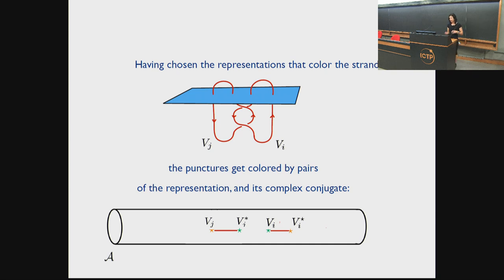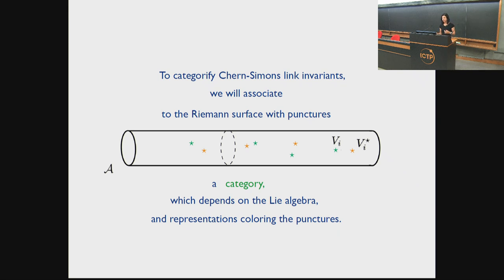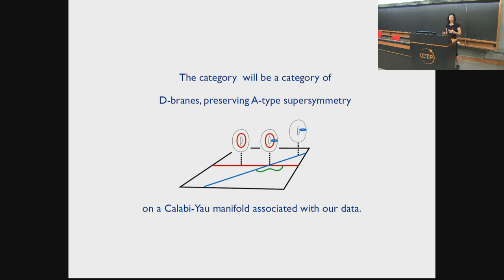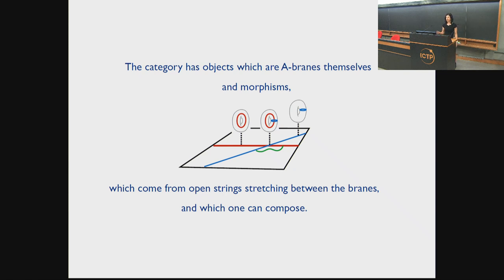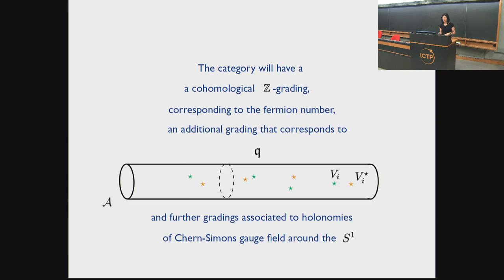Having chosen the representations that color the strands, the punctures get colored by pairs of a representation and its conjugate. To categorify Reshetikhin-Turaev link invariants, we'll associate to the Riemann surface with punctures a category that depends on the Lie algebra and representations that color the punctures. The category will be a category of D-branes preserving A-type supersymmetry on a Calabi-Yau manifold associated with this data — objects are A-branes themselves, morphisms come from open strings that stretch between branes. Our category will have a cohomological Z-grading, a fermion number, an additional grading corresponding to q of the Jones polynomial, and further gradings associated to holonomies of the Reshetikhin-Turaev gauge field around the S¹.